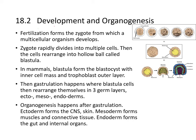Development begins with fertilization forming the zygote, from which a multicellular organism develops. The zygote rapidly divides into multiple cells, which rearrange themselves into a hollow ball called the blastula. The blastocoel is formed, surrounded by the blastoderm, forming the blastula.